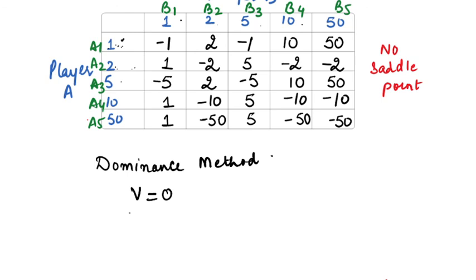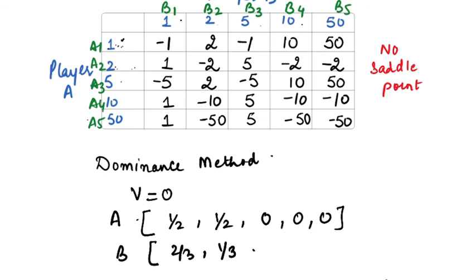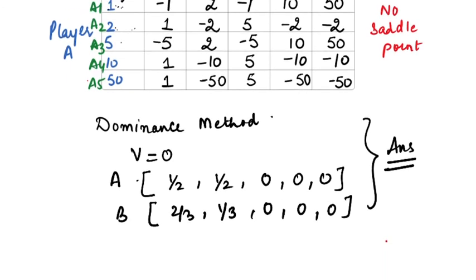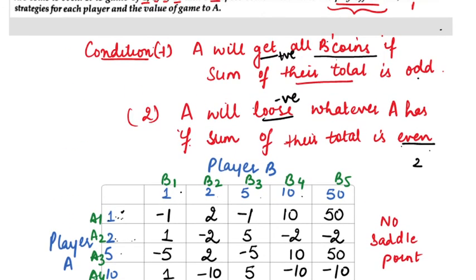The value of game comes out to be 0. The strategies which A will follow, since there is no saddle point, so it is a mixed strategy. So A will be following A1 with strategies A1 will be getting 1 by 2, A2 will be 1 by 2 and rest, the 3 strategies will be 0. Similarly for B, the strategies will be 2 by 3, 1 by 3, 0, 0 and 0. So this is the answer which I am leaving to you to do it on your own. If you need any help, do tell me. Thank you.